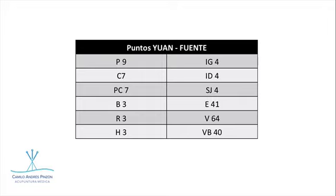Acá están los puntos Yuan Fuente, 12 puntos, cada uno en un meridiano. Los meridianos Yin: Pulmón 9, Corazón C, Pericardio PC, Vaso B, Riñón R, e Hígado H. Al lado de los meridianos Yang están los puntos Fu: Intestino Grueso 4, Intestino Delgado 4, San Jiao 4, Estómago 42, Vejiga 64, Vesícula Biliar 40. Recuerden combinarlos con los Shu posteriores para tratar enfermedades de los Zan principalmente.